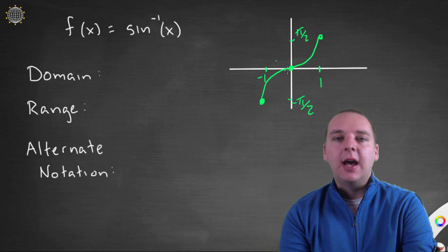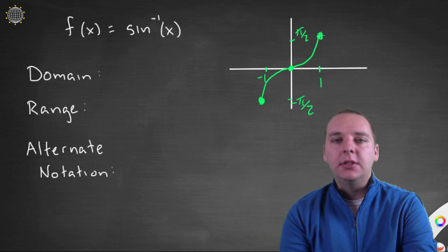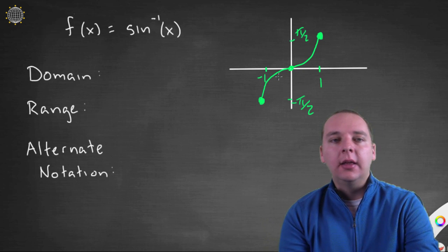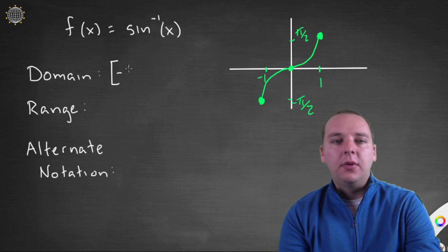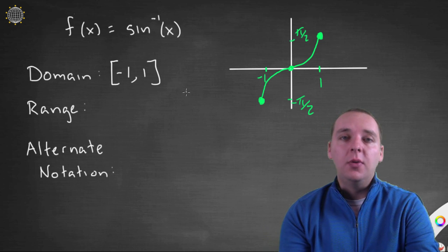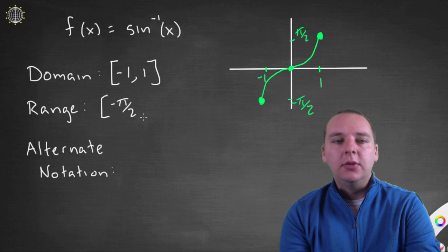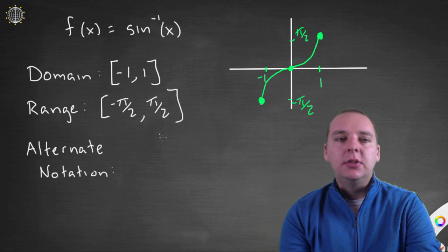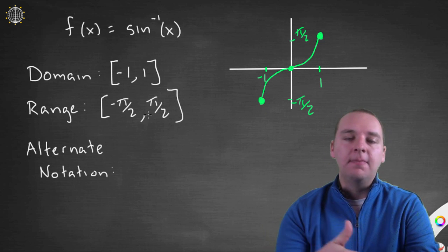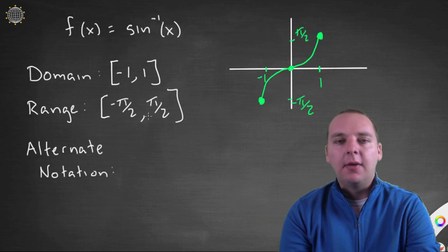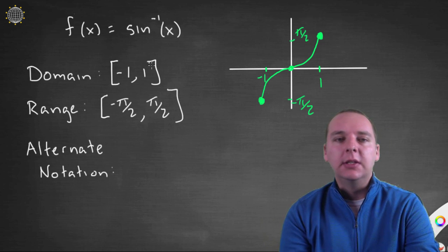It's important to note this graph is not going to keep repeating, because we restricted the domain to make sure the original graph had an inverse. So this inverse function is not periodic. The domain will be from minus one to one — which was the range of the sine function — and the range will be minus pi over two to pi over two, which was the restricted domain of the sine function. The domain and range just swap, which makes sense.